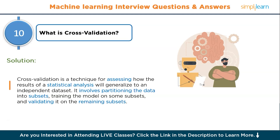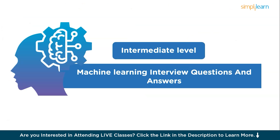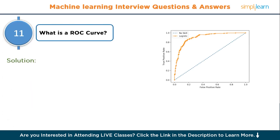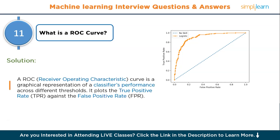That covers questions one through ten at the beginner level. Now moving to intermediate level, covering ten questions. Starting with question eleven: what is a ROC curve? ROC stands for receiver operating characteristic curve. It is a graphical representation of a classifier's performance across different thresholds. It plots the true positive rate (TPR) against the false positive rate (FPR).